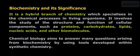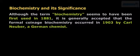Chemical biology aims to answer many questions rising from biochemistry by using tools developed within synthetic chemistry. Although the term biochemistry seems to have been first used in 1881, it is generally accepted that the formal kinase biochemistry occurred in 1903 by Karl Neuber, a German chemist.